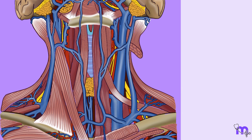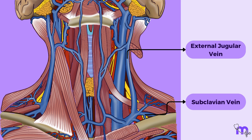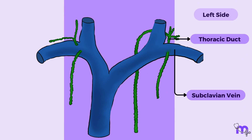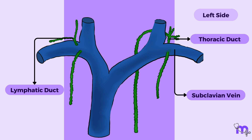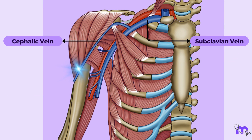The tributaries of the subclavian vein include the external jugular vein, dorsal scapular vein, thoracic duct on the left side and right lymphatic duct on the right side. Occasionally, the cephalic vein may also join the subclavian vein.